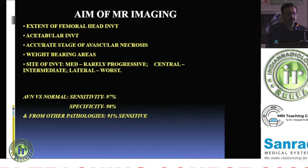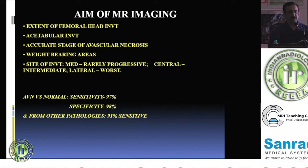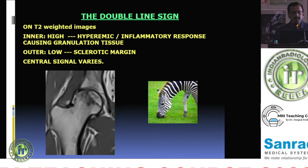Because MRI has such high sensitivity and specificity (~98%), it can be used for screening. For screening a large population — such as patients who received high-dose steroids during the COVID era — you need only one sequence: a coronal T1. This single sequence is sufficient to identify AVN before patients actually present with hip pain.